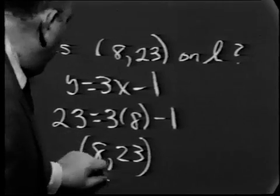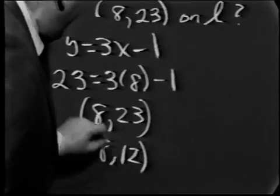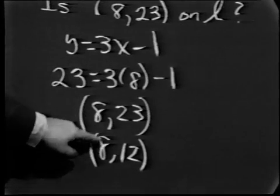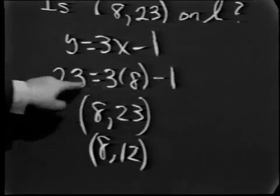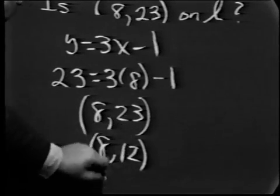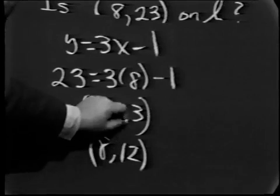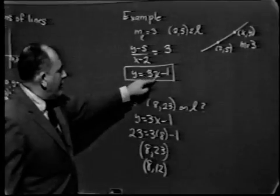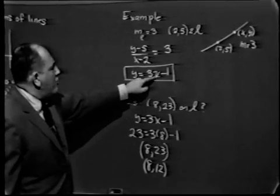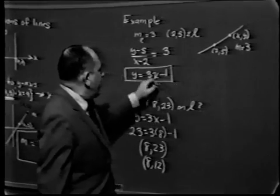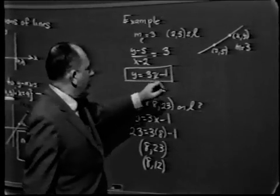How about 8 comma 12? 8 comma 12 isn't on the line because 3 times 8 minus 1 is not 12. But notice that we can even see algebraically that 8 comma 12 must be below the line. In other words, our study of equations allows us not only to visualize lines as equations, but we can also visualize inequalities as pictures.